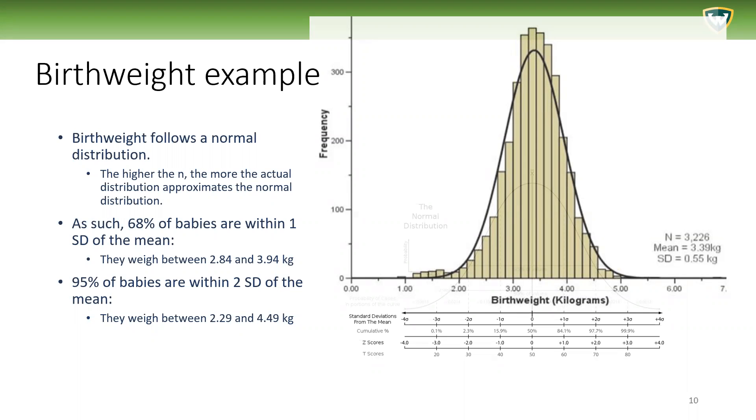Let's take this example of birthweight to better understand normal distribution, z-scores, and probabilities. Birthweight follows a normal distribution. We know this because birthweights of babies have been studied for a long time, and once we start accumulating lots of babies and measuring their births, we can see that the actual distribution approximates the normal distribution.